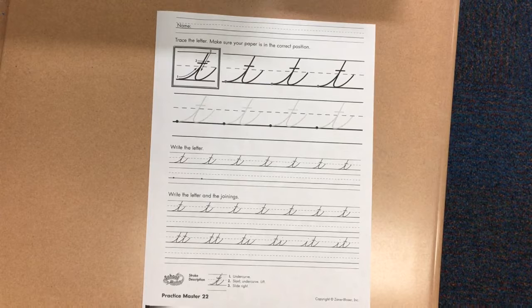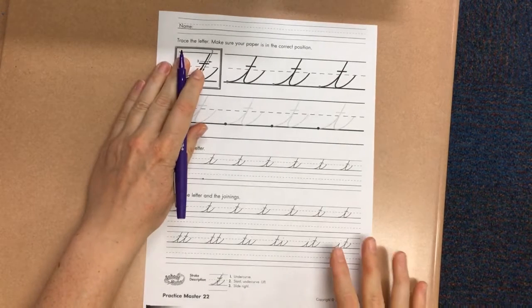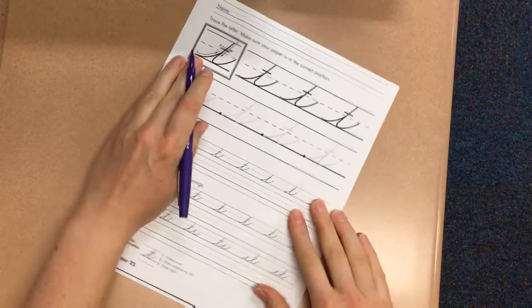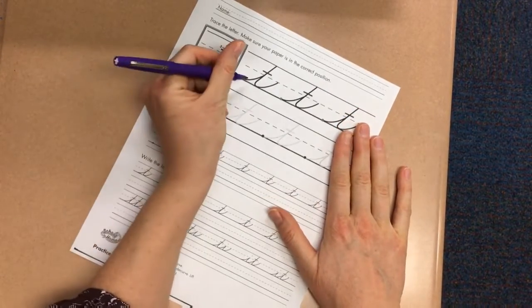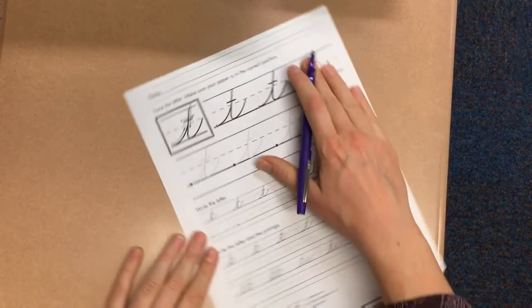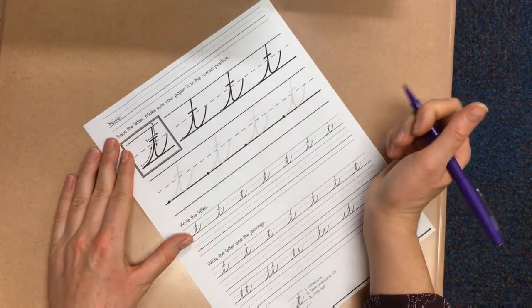Hello, today we are going to work on our cursive T. Remember, if you write with your left hand, you want to make sure that you're pushing the left corner up and holding the paper with your right hand. If you are right-handed, you are going to push the right corner up and secure the paper with your left hand.